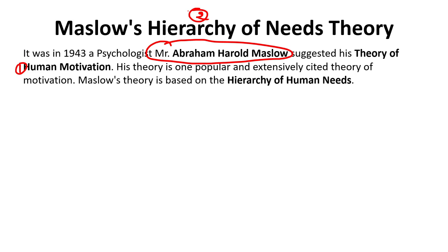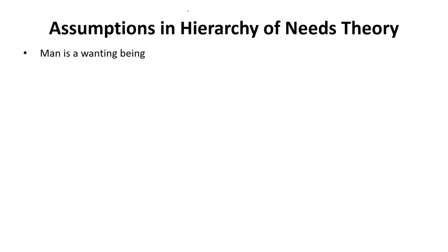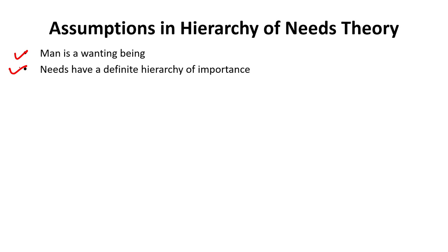According to this theory, human needs can be divided and arranged in a hierarchy. There are certain assumptions. First, man is a wanting being — every person has demands. Second, needs have a definite hierarchy of importance: first you need food, then safety, then friendship, then social status, and finally self-fulfillment. The first thing anybody needs is food — survival comes first. There is a proper hierarchy of needs.